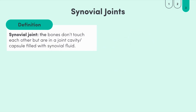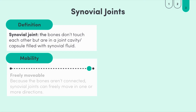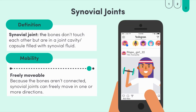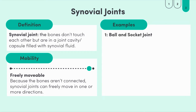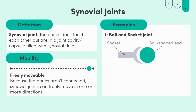Synovial joints offer full range of motion in at least one direction, and combined they allow us to participate in sports and exercise. The first type of synovial joint is the ball and socket joint. This one is named based on its structure and is easy to remember. You can see here that the joint includes a bone with a spherical head — the ball — and a cup-like socket that the ball sits in.